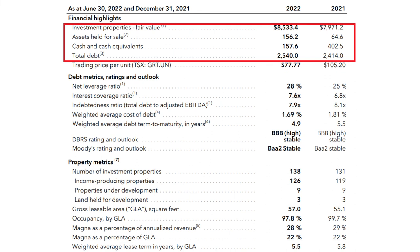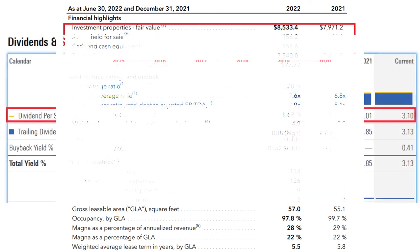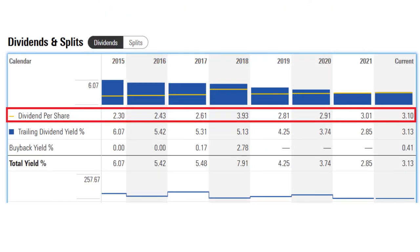The next indicator was debt-to-asset ratio, which is only 28% for Granite — a very healthy amount for a real estate company, as most real estate investment trusts have higher debt-to-asset ratios. The next indicator is distribution history and Granite has a long history of paying out and increasing its distribution year over year. In the last five years, they increased the distribution by an average of 3.7% year over year, which is good.